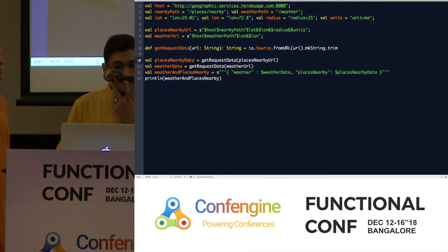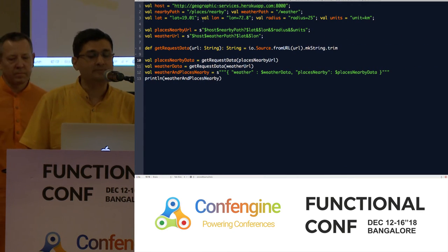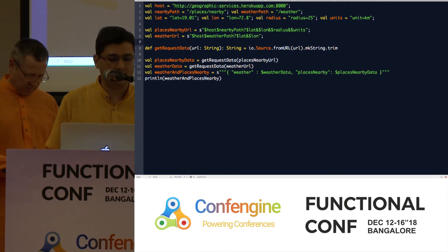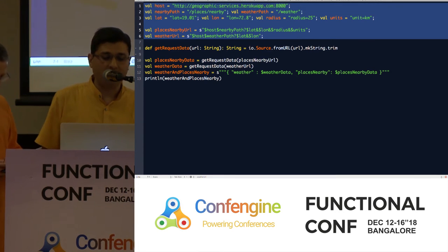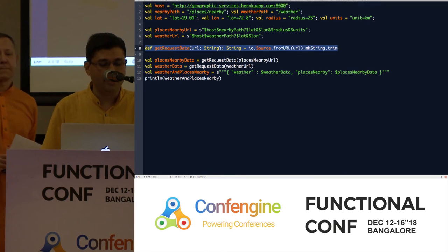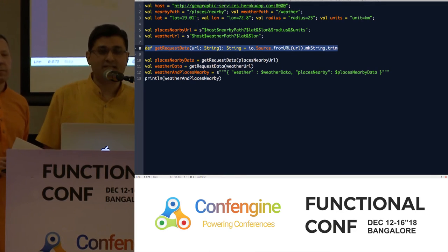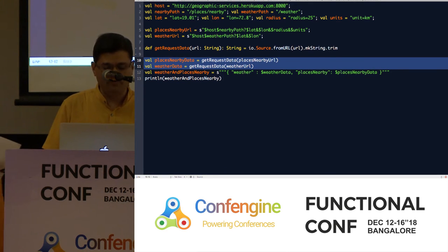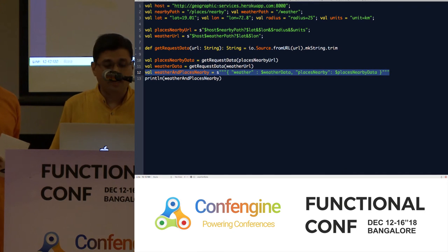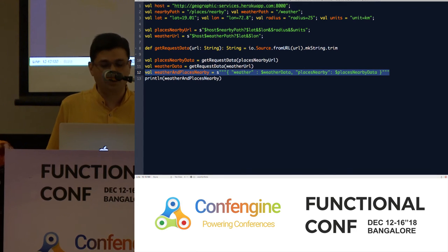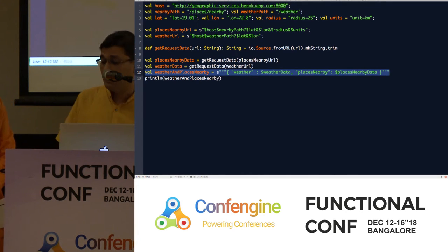Let's look at how this particular code would be rendered sequentially. I'm using Scala at this point. This is just setting up the URL and all the required stuff. This is going to make the request given a particular URL and return the result. I'm going to invoke here one after the other in sequence, then collate the results and finally print it. This is standard vanilla sequential code.